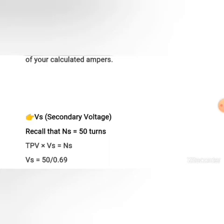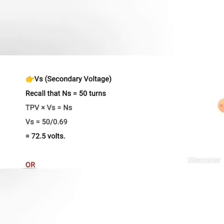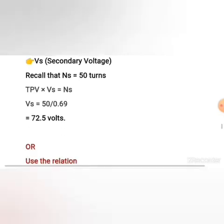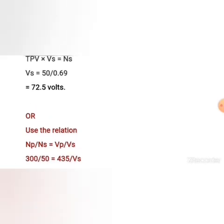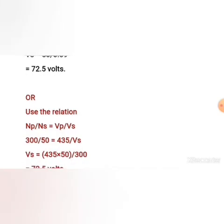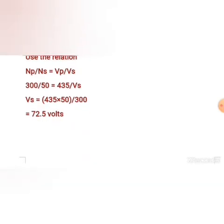For secondary voltage, using the same formula — turns per volt times secondary voltage equals number of turns — we substitute and make secondary voltage the subject: 50 turns divided by 0.69 turns per volt gives us 72.5 volts. You can also use the popular transformer ratio formula: Np over Ns equals Vp over Vs. Substituting 300 turns primary, 50 turns secondary, and 435 volts primary, we still get 72.5 volts as our secondary voltage.